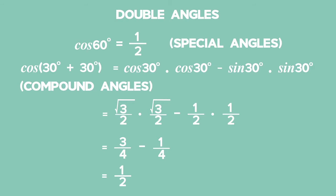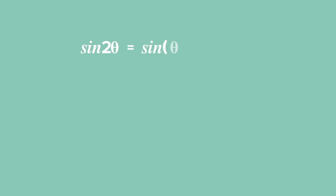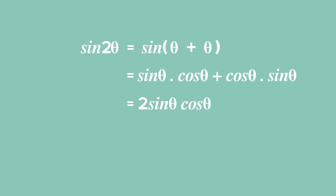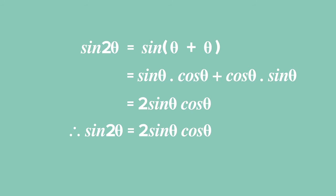Let's see what happens when we expand sin 2θ. 2θ can be written as θ plus θ, so sin 2θ is equal to sin(θ plus θ). This equals sin θ times cos θ plus cos θ times sin θ, which is equal to 2 sin θ cos θ. Therefore sin 2θ equals 2 sin θ cos θ is the double angle expansion for sin 2θ.